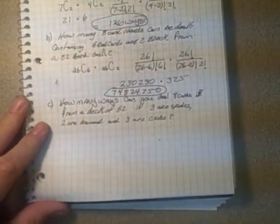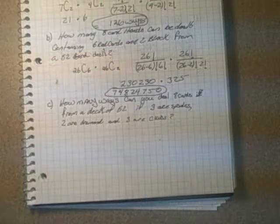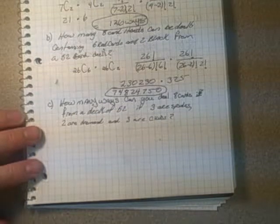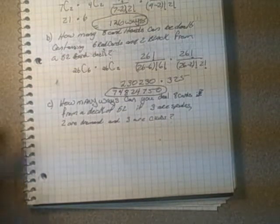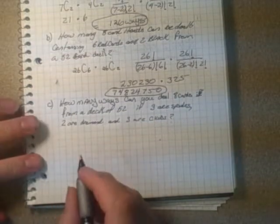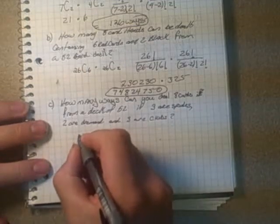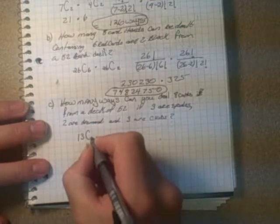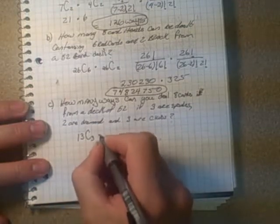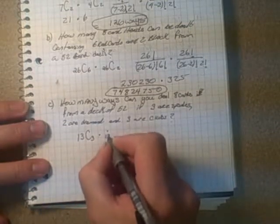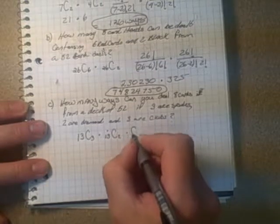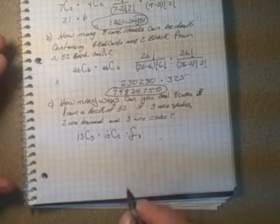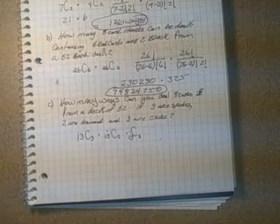How many ways can you deal 8 cards from a deck of 52 if 3 are spades, 2 are diamonds, and 3 are clubs? Well, how many spades? 13. How many diamonds? 13. How many clubs? 13. So we have 13C3 for the spades, 13C2 for the diamonds, and 13C3 for the clubs. Notice there's no hearts there, so you don't have to worry about it.